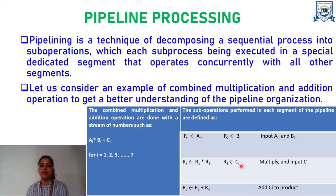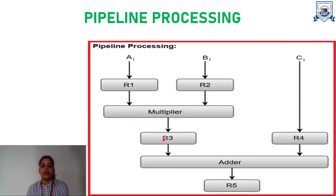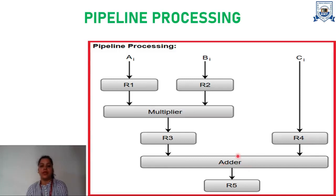At the same time, the third input C is being transferred into the R4 register. In the next segment, the content of R3 and R4 registers will be added to perform the addition operation, and the result will be stored in R5 register. This is the block diagram of this pipelining processing. Initially, inputs A and B are transferred into R1 and R2 registers respectively. Then multiplication is performed by the multiplier and the result is stored in R3 register. After which, input C is transferred into R4 register, the adder performs the addition on R3 and R4, and the final result can be obtained from R5 register.